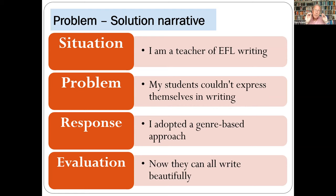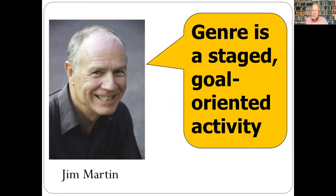Genre approaches describe the stages which help writers set out their thoughts in ways readers can easily follow. All genres have a social purpose — they're trying to get something done for the writer. The main goal of a narrative is to entertain through storytelling, achieved through these fairly conventional steps. Jim Martin calls genre 'staged goal-oriented activity': we can't achieve our goal all in one jump, so we work towards it in stages.